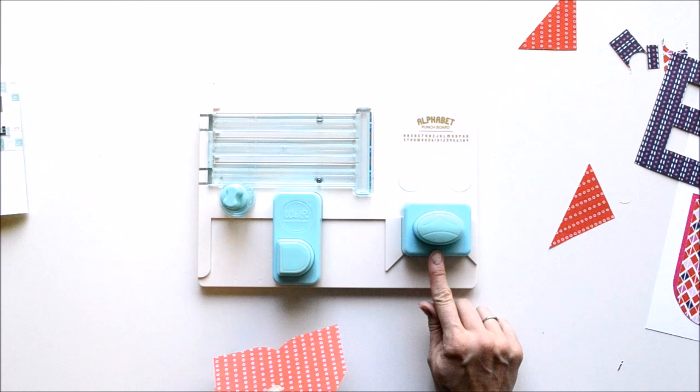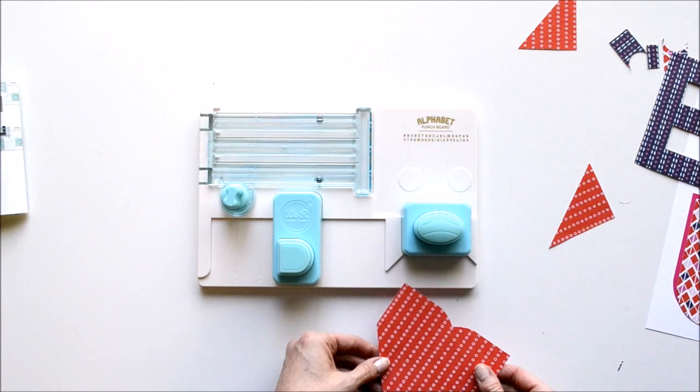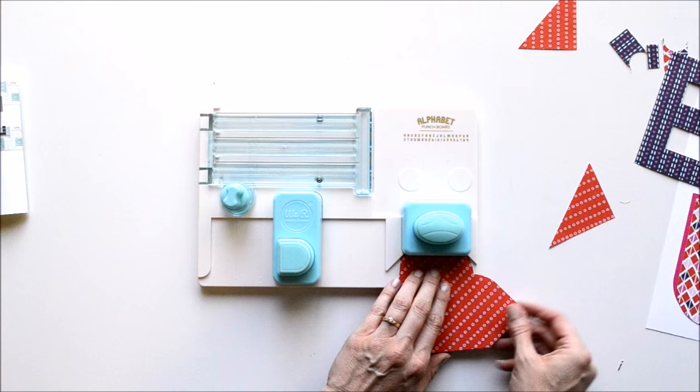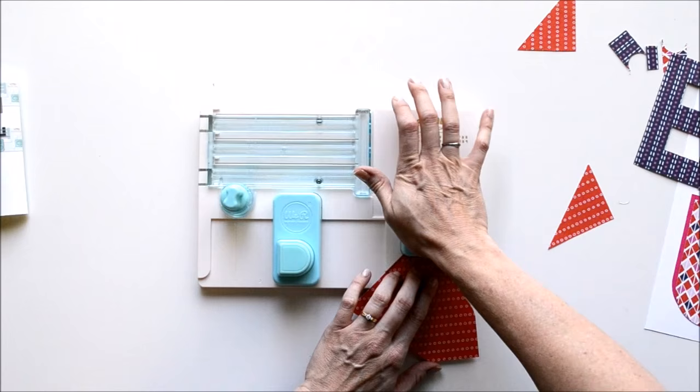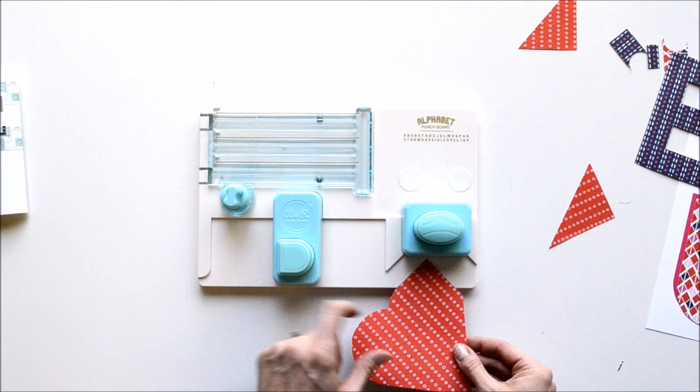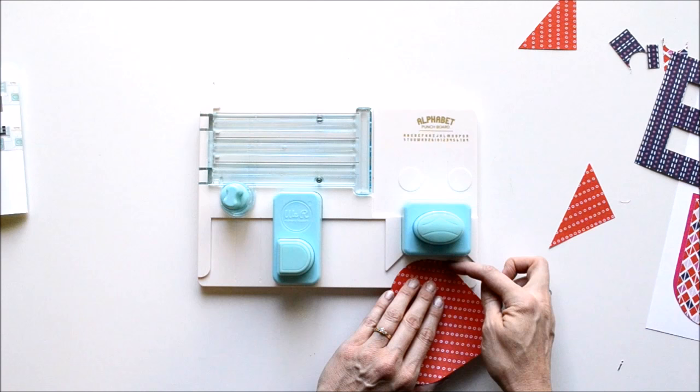Okay, so once we've done that we're going to work with this side of the punch - this is the corner rounder. We're going to slide this corner right in, there's some nice guides there to help you get it exactly where it needs to be. We're going to punch once, then we're going to pull it out and we're going to line this straight line up right with this guide right here. Slide that in as far as it will go and punch again. Voila! See how you've got a nice rounded curve there? Same thing on this side - slide that corner in, punch once, turn it so this is lined up on your guide right there, and punch. There is a perfect heart.